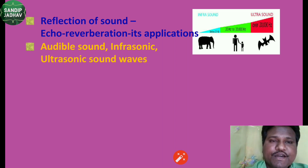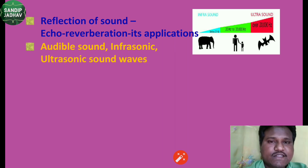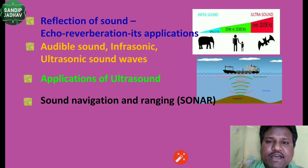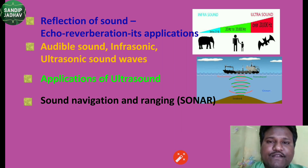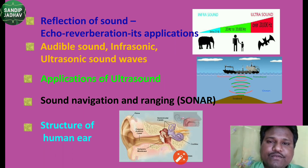The classification of sound is based on frequency: infrasonic sound has a frequency less than 20 Hz; audible sound has a frequency between 20 to 20,000 Hz; and ultrasonic sound has a frequency greater than 20,000 Hz. We will see the application of ultrasound, particularly SONAR — Sound Navigation and Ranging — with which we can find the distance of submarine objects. The last topic in this chapter is the structure of the human ear, covering how we hear sound.